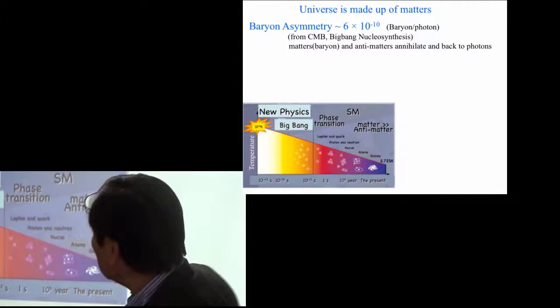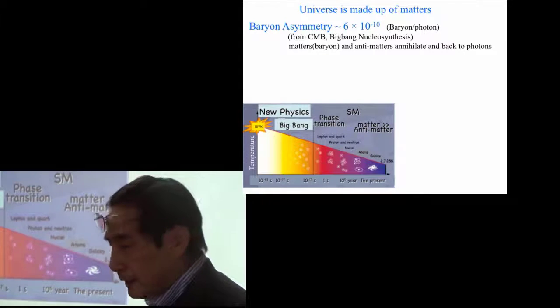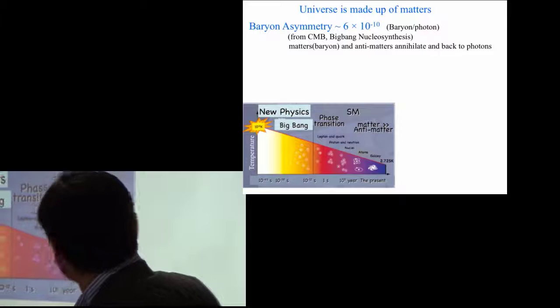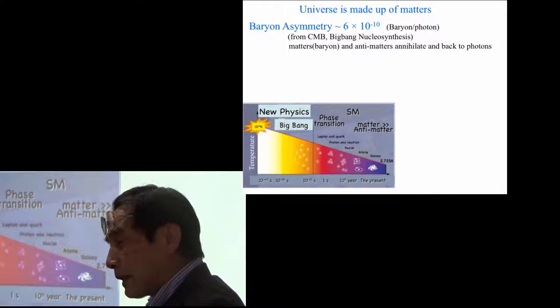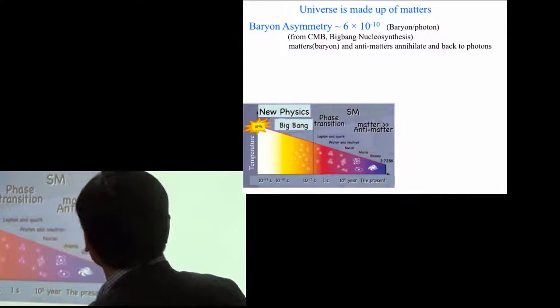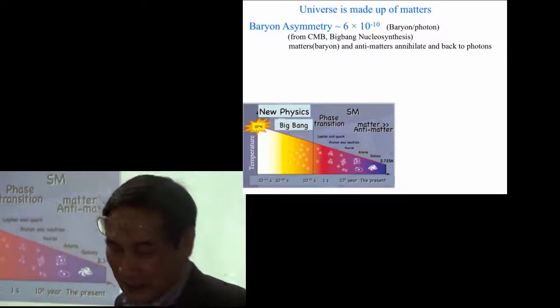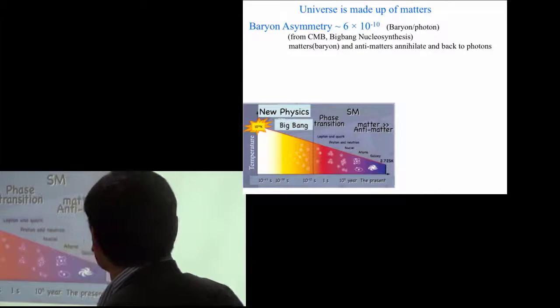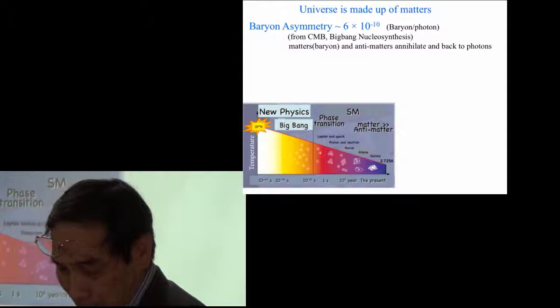In the beginning of the universe, if the matter and antimatter is produced with the same rate, then the matter and the antimatter is annihilated and go back to the photons and no matter is left. But our universe is made up of matter, practically.